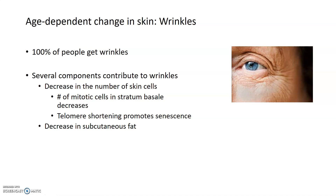The first cause is that there's a decrease in the number of skin cells as we age. That is a direct result of a decrease in the number of mitotic cells in the stratum basale, which is the layer of the epidermis at the very bottom — the innermost layer where new skin cells are generated. The level of mitosis in this layer is very high, but as we age, telomere shortening within these cells promotes senescence, or a stoppage of cell division, decreasing the number of skin cells made by the stratum basale. If you can't replace older skin cells with new ones, that can lead to age-dependent changes.